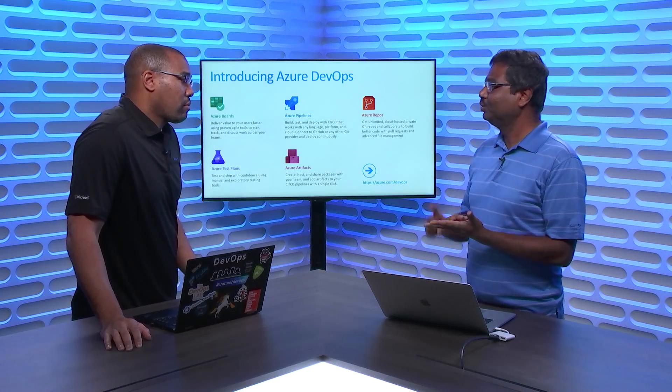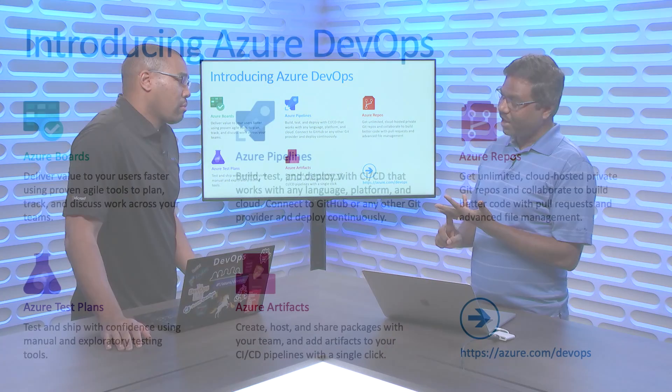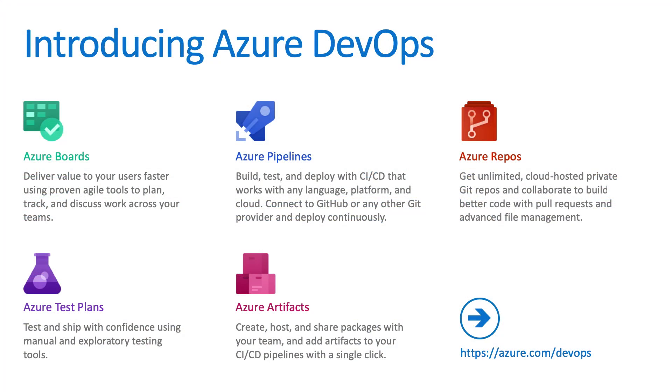Azure DevOps Suite helps every customer take their application and run through the cycle and deploy it. It contains Azure Boards for all planning requirements, Azure Pipelines for continuous integration and continuous delivery, Azure Repos to store your code, Azure Test Plans for testing, and Azure Artifacts for storing your artifact solution. Azure DevOps is everything that you need to turn an idea into a working piece of software.